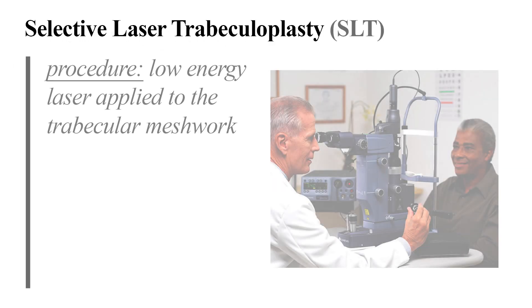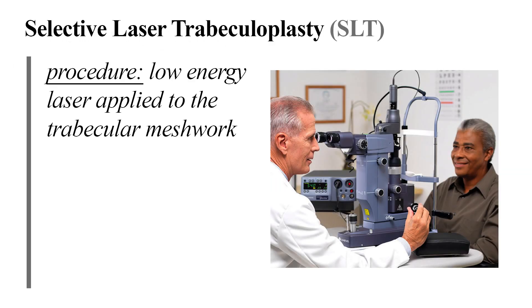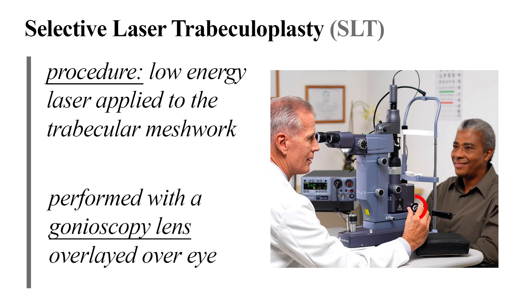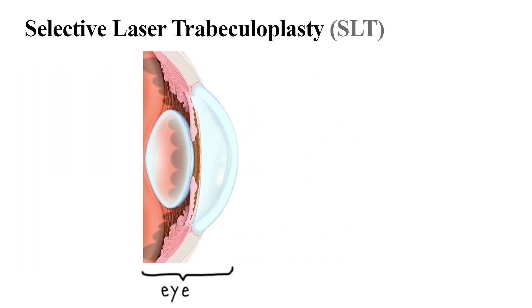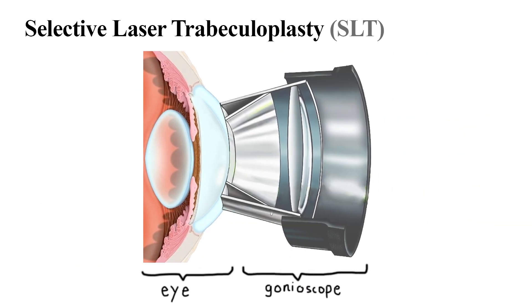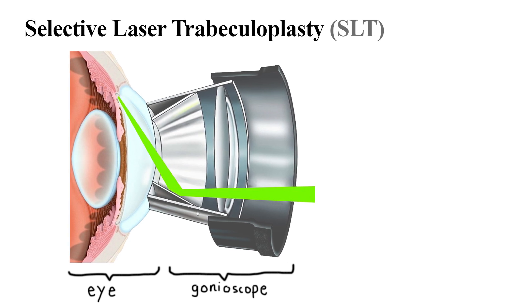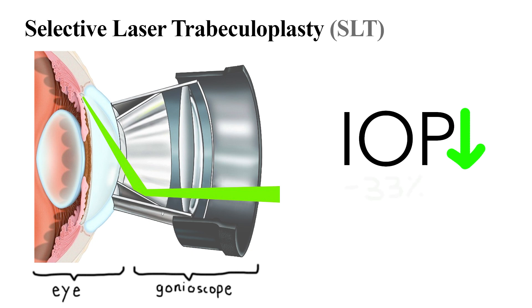Sounds pretty bad, right? How do we treat that? Well today, we'll be talking about one way. Selective laser trabeculoplasty, or SLT, is a widely performed procedure in which a low-energy laser is applied to the trabecular meshwork. Usually, the procedure is performed with a gonioscopy lens, a mirrored contact lens that allows a physician to visualize your angle and trabecular meshwork. Then the laser is directed through the gonioscopy lens into your trabecular meshwork.